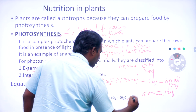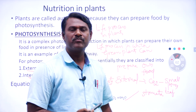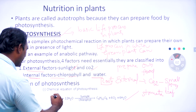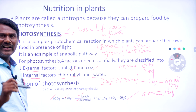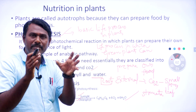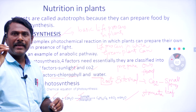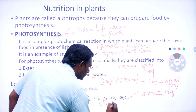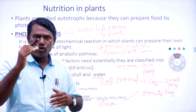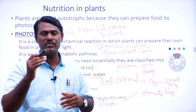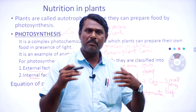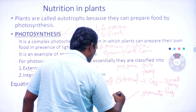Now we can see the balanced equation of photosynthesis — very important from the exam point of view. We need four factors: carbon dioxide, water, sunlight, and chlorophyll. By utilizing these four factors, plants prepare food material, and the prepared food is preserved in the form of glucose. C6H12O6 is the formula of glucose. Along with glucose, the other byproducts released by photosynthesis are oxygen and water.